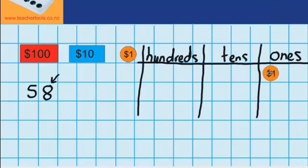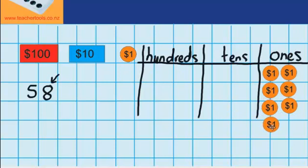There's one, two, three, four, five, six, seven, and eight. Now if we look back at our number over here, you can see we've still got the tens left. I can see that I need to get five tens.